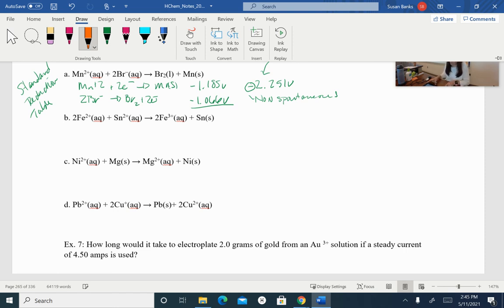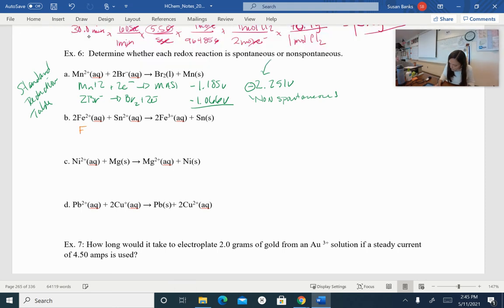So I'm going to look up iron plus two. So if I go for iron plus two, and I am going to go to iron plus three plus an electron, and I need to double this so that I get two electrons, that gives me a voltage of negative 0.771 volts. And then if I do tin plus two plus two electrons going to solid tin, that gives me a voltage of negative 0.1375 volts. So if I add those two up, I get a negative 0.909 volts. So once again, that is a negative voltage. So this is non-spontaneous.